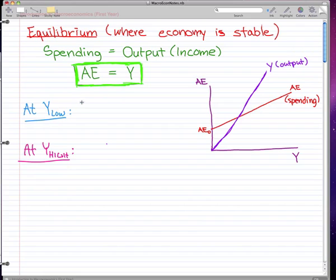At Y_low, aggregate expenditure (AE), which is the spending, is greater than Y, the output. Or we can say that AE_0 plus ZY is greater than Y. Remember that I've said in the last video that AE is pretty much AE_0 plus ZY.